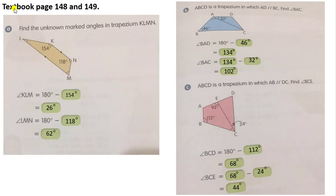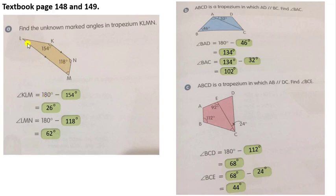Now, open your textbook page 148 and 149 and practice with the teacher. Problem A: find the unknown marked angle in trapezium KLMN. We need to find angle KLM — the angle at point L. We can find this easily by taking 180 degrees minus 154 degrees. The answer for angle KLM is 26 degrees.